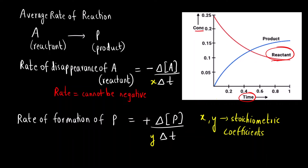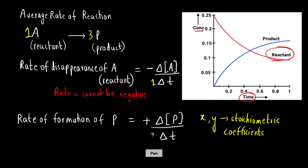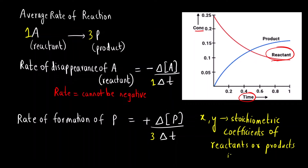What is the meaning of stoichiometric coefficient? It is the number that we write before the reactant to balance the equation. For example, if we have 1A converting to 3P, then for A the denominator will be 1 into delta t, and for P it will be 3 into delta t. These stoichiometric coefficients come from the balanced reaction — this is very important.